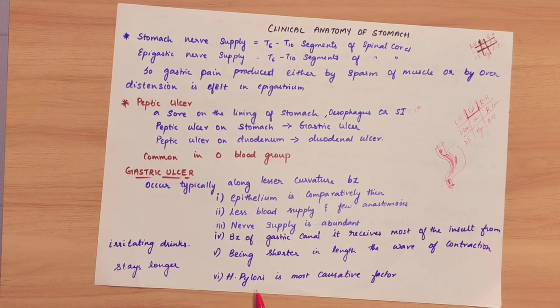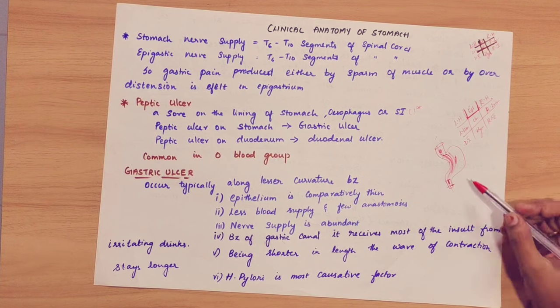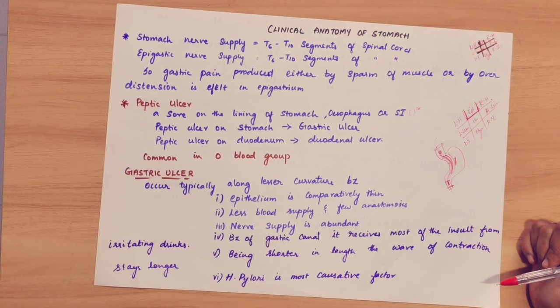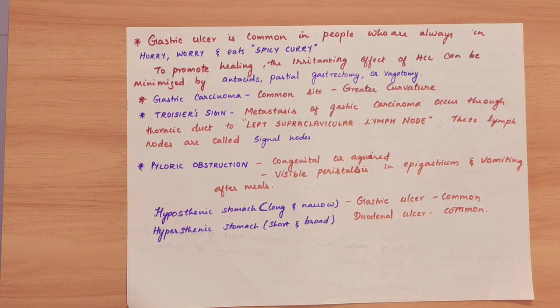H. pylori is the most common causative factor for gastric ulcer. H. pylori is a bacteria. Gastric ulcer is common in people who are always in a hurry, worry, and eat spicy curry.